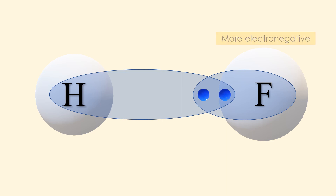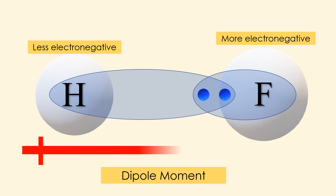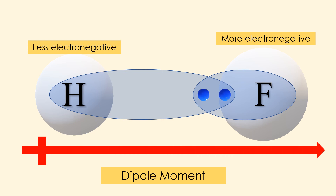In hydrogen fluoride, fluorine is more electronegative and hydrogen is less electronegative. Fluorine attracts the shared pair of electrons, creating a dipole moment. An arrow is drawn towards the atom with higher electron density — fluorine in this example.